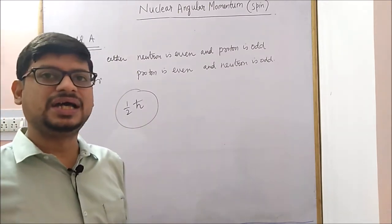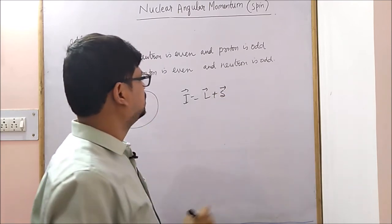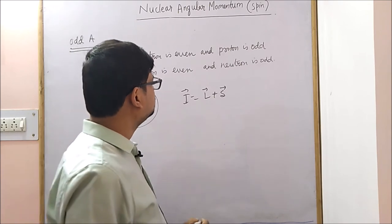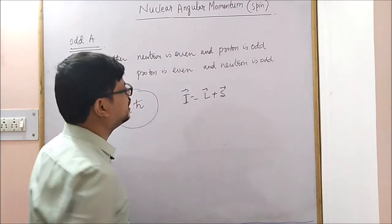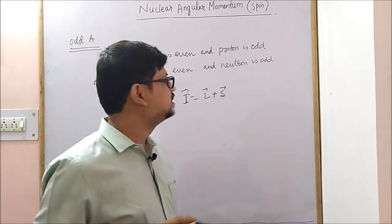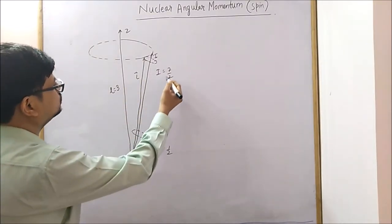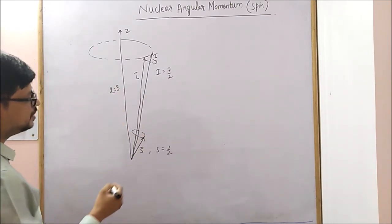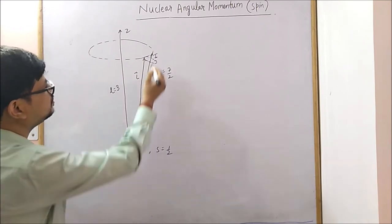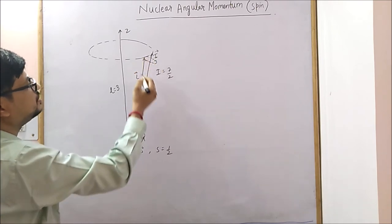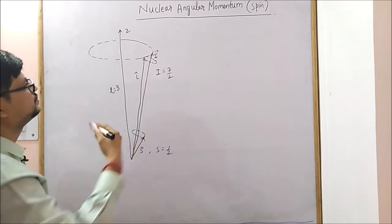Classically, when I = L + S, we can say that L and S precess around their resultant I, and I precesses around the z-direction. For example, for I = 7/2 where S = ½ and L = 3, the spin S precesses around the resultant I, and L also precesses around I, which in turn precesses around the z-axis. This is how the precession structure looks.